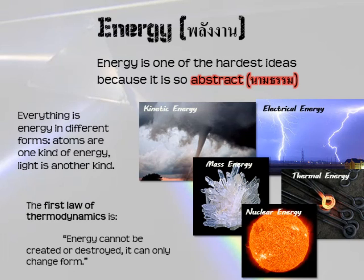Mass energy is atoms — anything made from atoms is mass, and that has its own energy, so you are mass energy. Then there is thermal energy, or heat. You can see the iron poker there has a lot of thermal energy because it is glowing red hot. Something else that is very hot is the sun — the sun has a lot of thermal energy, but really it runs on nuclear energy, which is the energy from inside atoms coming out into another form. And that is nuclear energy.